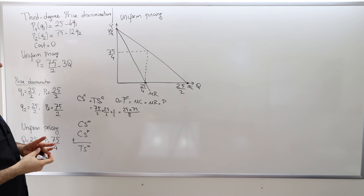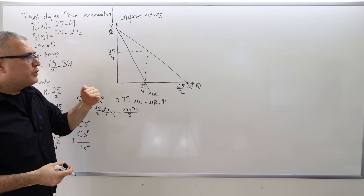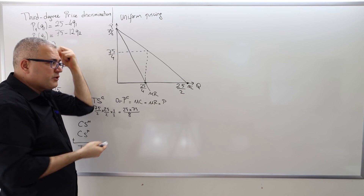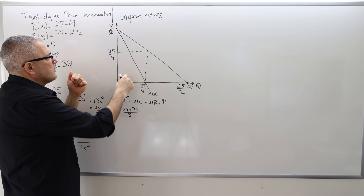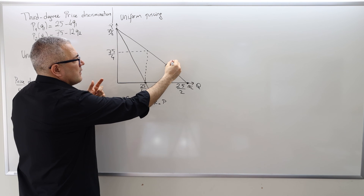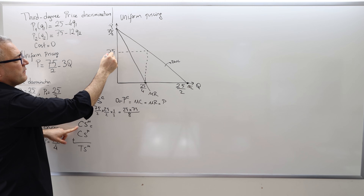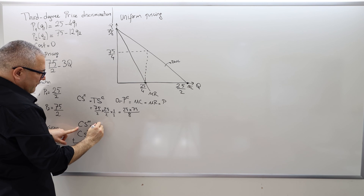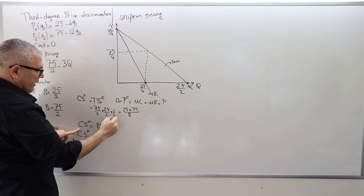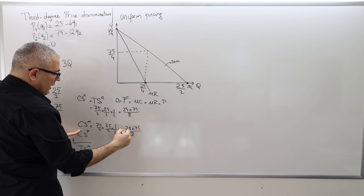On this graph, the consumer surplus is the triangular area between the demand curve and the price line. The producer surplus is the rectangle — price times quantity, since the marginal cost (supply curve) is the horizontal axis. The deadweight loss is the remaining triangle. The consumer surplus equals (75/2 − 75/4) × (25/4) × 1/2 = (75/4) × (25/4) × (1/2) = 25 × 75 / 32.